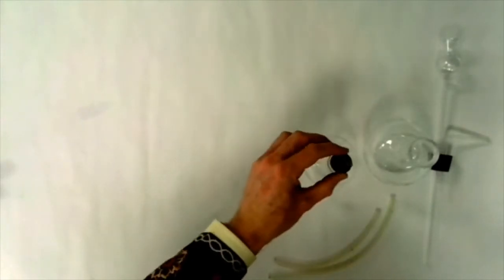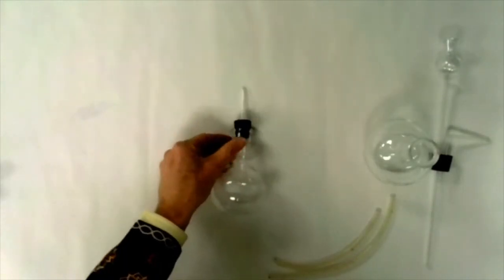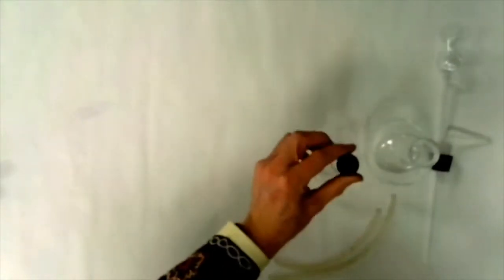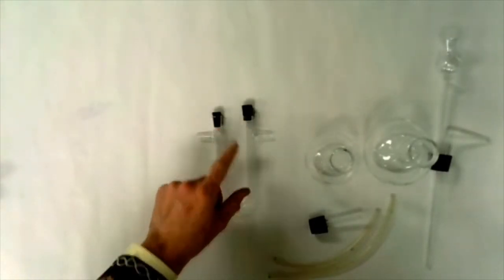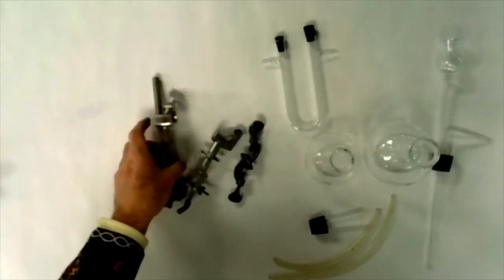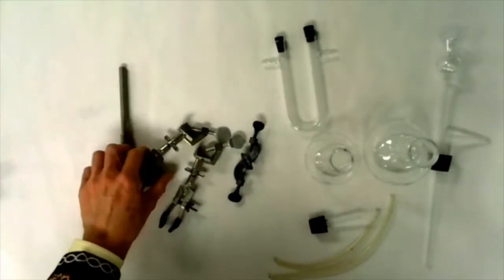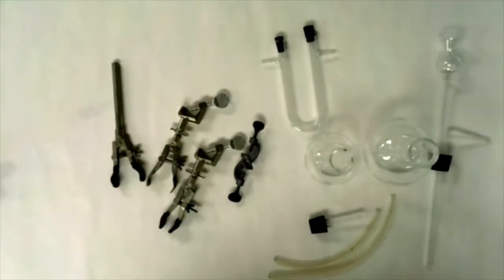A stopper that fits the small Florence flask. A drying tube. We're going to use a U-tube that has two stoppers in it and several clamps to hold everything securely.